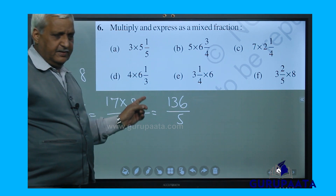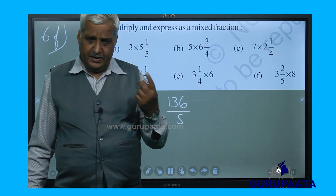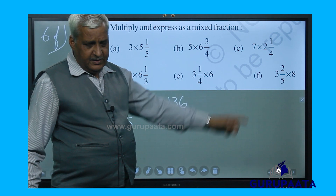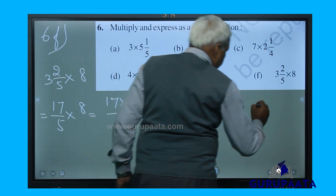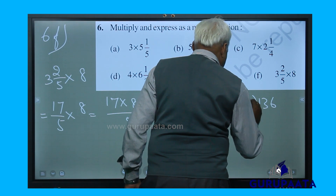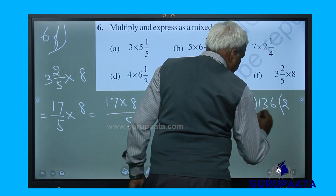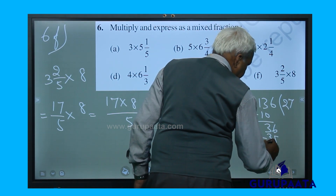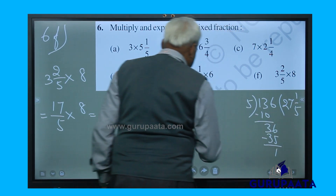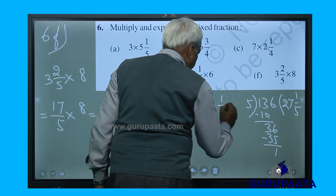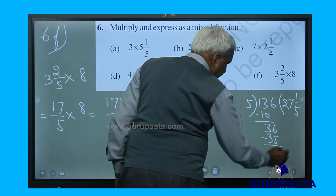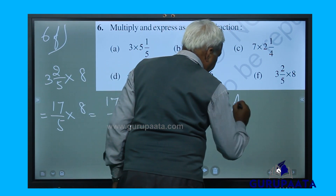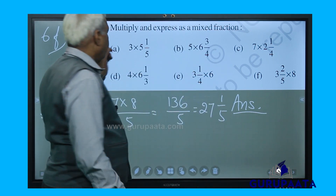136 by 5 is an improper fraction, to be converted to a mixed fraction as per the question's instruction. Dividing 136 by 5: 5 tens are 50, remainder 1. Our answer is 27 and 1 by 5. I am removing this portion to avoid confusion. This is the only answer for question number 6f.